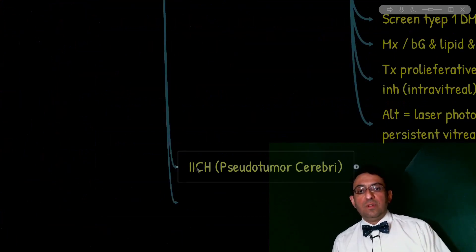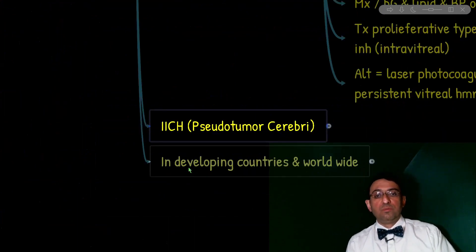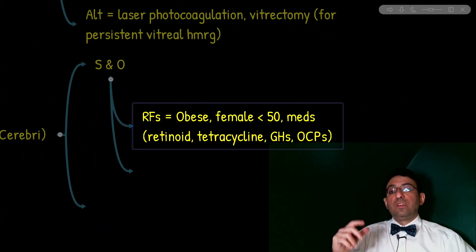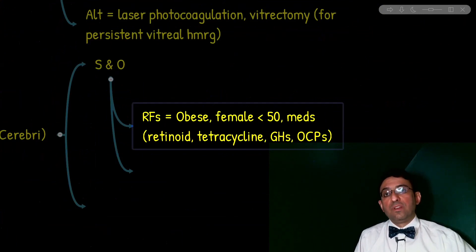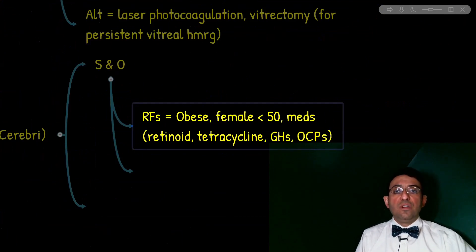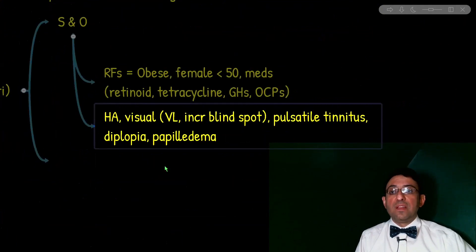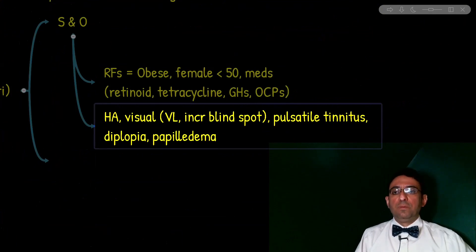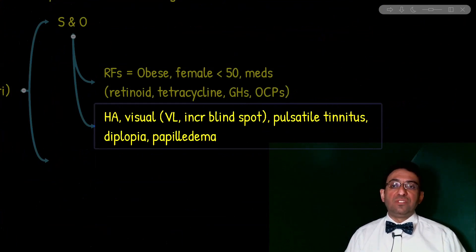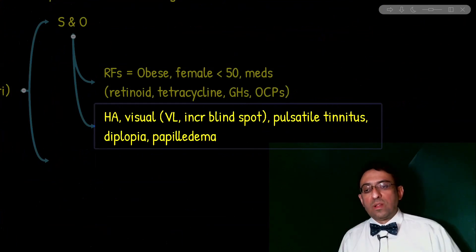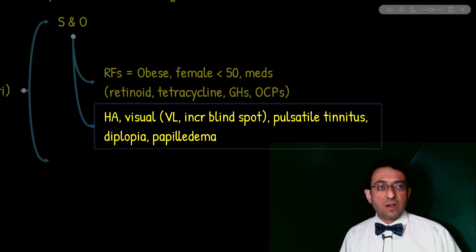Next is idiopathic intracranial hypertension or pseudotumor cerebri. For case identification: we are usually dealing with an obese female younger than 50 who has taken retinoids, tetracycline, growth hormones, or OCPs. Findings resemble ICP elevation and include headache, visual symptoms (visual loss, increased blind spot, blurred vision, diplopia), and pulsatile tinnitus. On ophthalmoscopic exam, we expect papilledema.